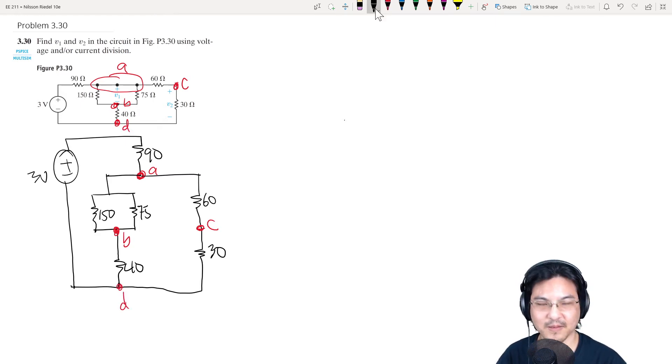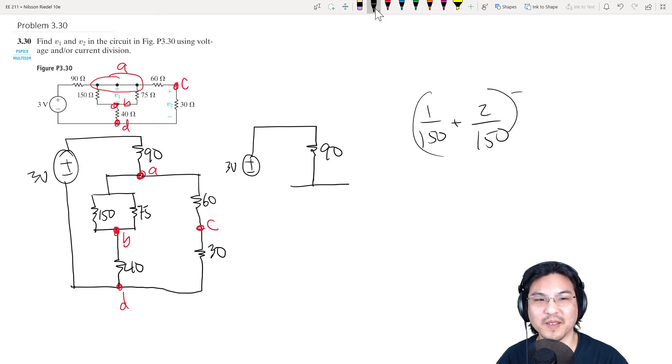Okay, so it's... Let's simplify this further. See between node A and D, it'd be good if we could figure out what's happening. So let's go step by step first. Okay, what's this in parallel? 1 over 150, 1 over 75, which is 2 over 150, so that's 3 over 150, and then take the reciprocal, so that's 50.